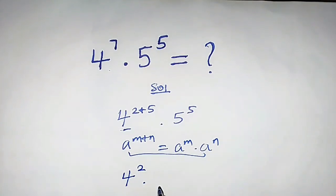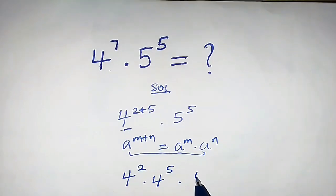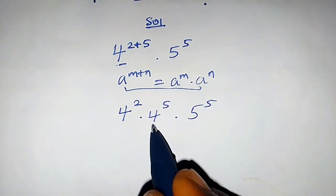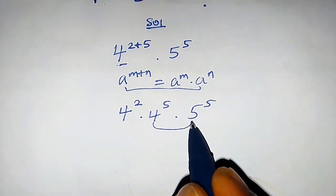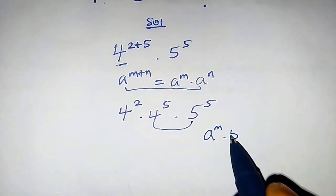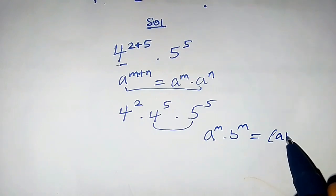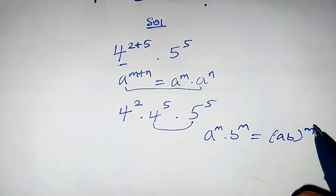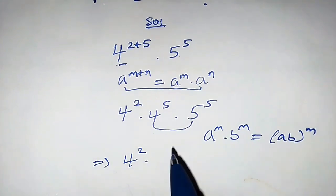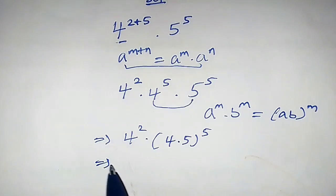Applying the property, we get 4 raised to power 2 times 4 raised to power 5 times 5 raised to power 5. Now let's use another property: a raised to power m times b raised to power m can be rewritten as (a×b) raised to power m. This implies that 4 raised to power 5 times 5 raised to power 5 becomes (4×5) raised to power 5, which is 20 raised to power 5.